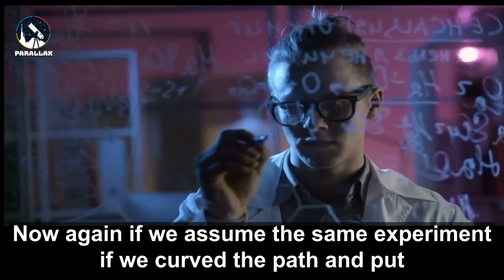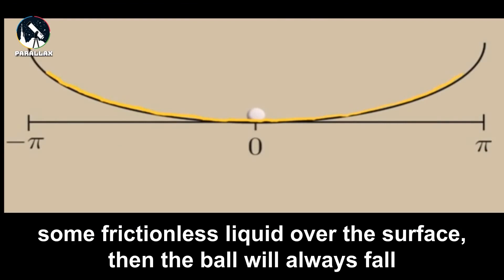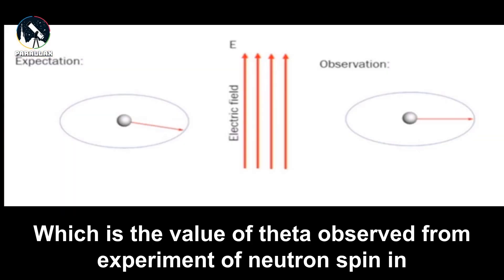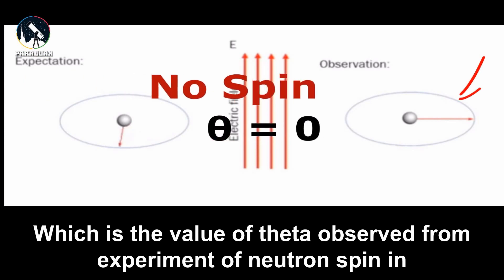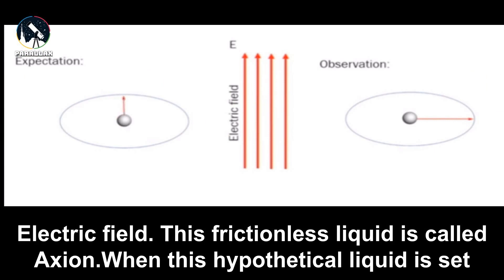Now again, assuming the same experiment, if we curve the path and put some frictionless liquid over the surface, then the ball will always attain the value of theta close to zero, which is the value of theta observed from the experiment of neutron spin in an electric field. This frictionless liquid is called the axion.